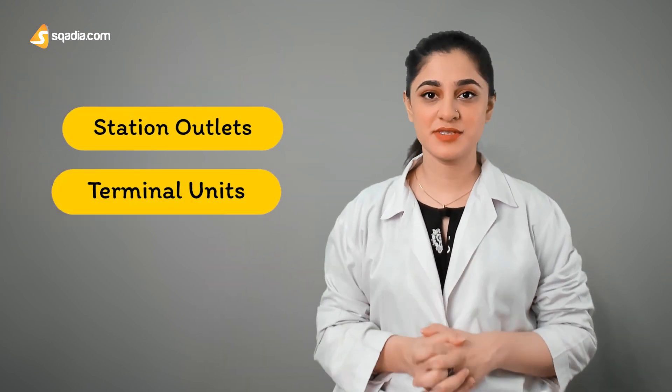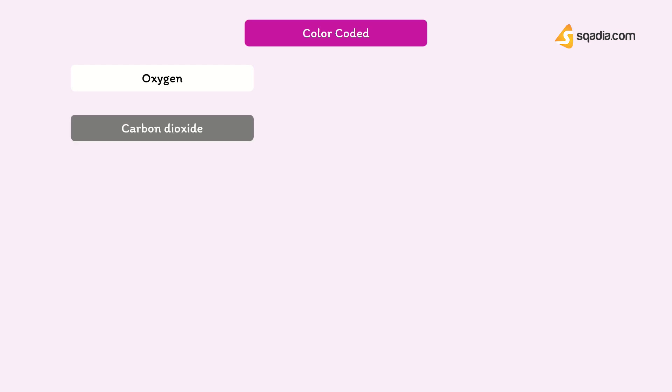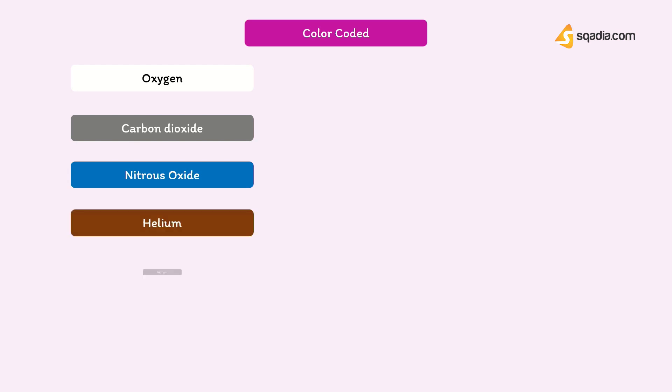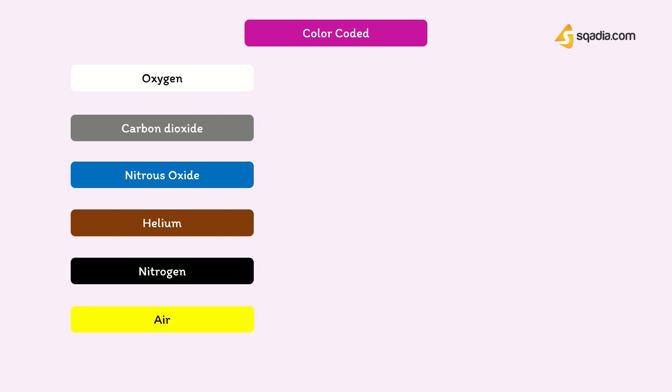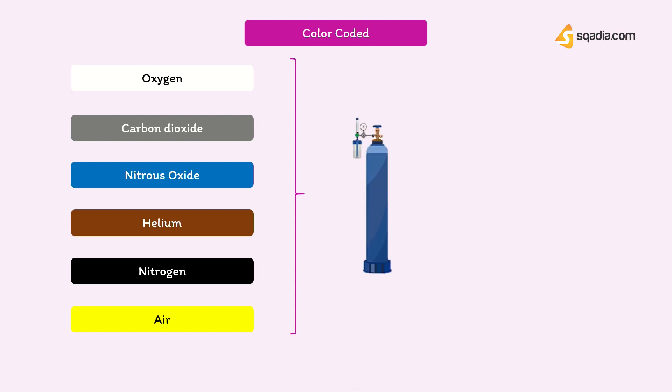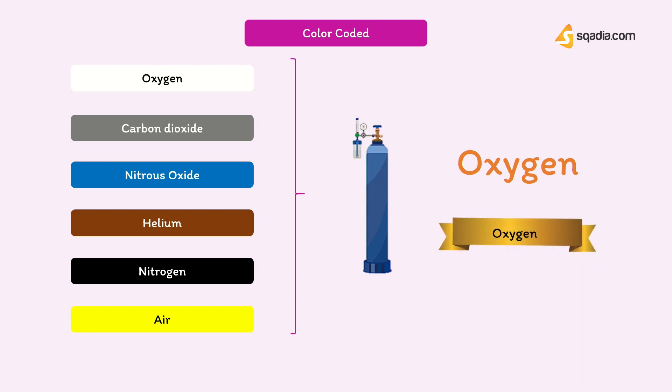Equipment is connected to the medical gas pipeline system through station outlets and terminal units. Medical gas systems are commonly color-coded to identify their contents: white for oxygen, gray for carbon dioxide, blue for nitrous oxide, brown for helium, black for nitrogen, and yellow for air. As coding systems and requirements vary by jurisdiction, the text or labeling is the most reliable guide to the contents.